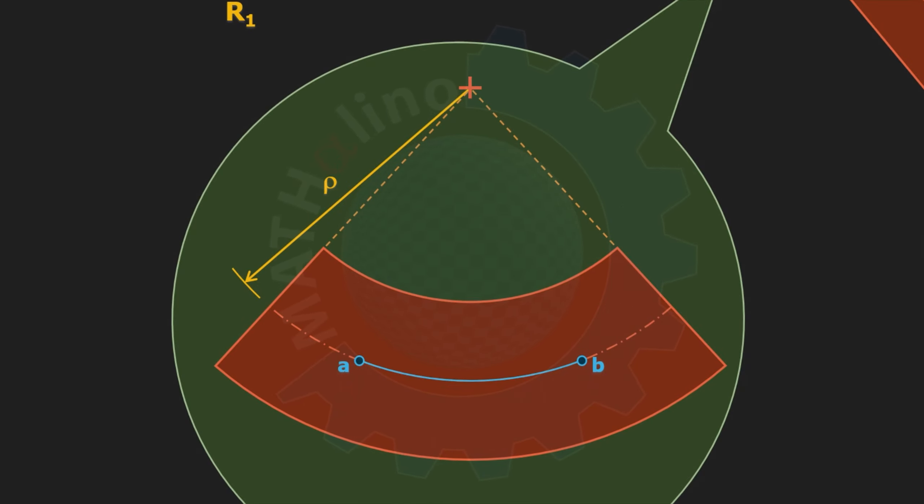This is the length ab in our deformed beam. Remember our assumption number two, that this fiber does not change in length because it lies in the neutral surface. And this one is the fiber cd at a distance y above ab.